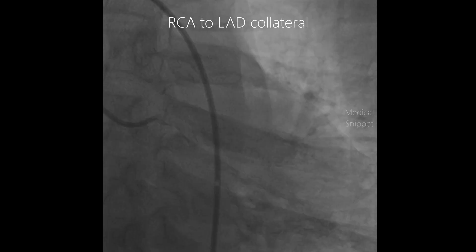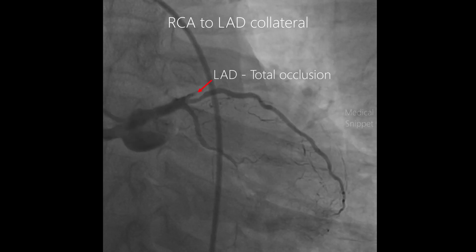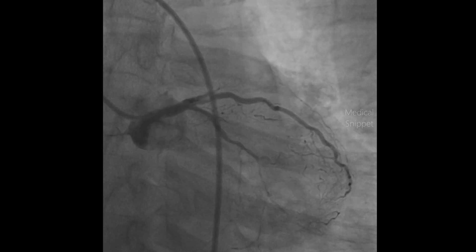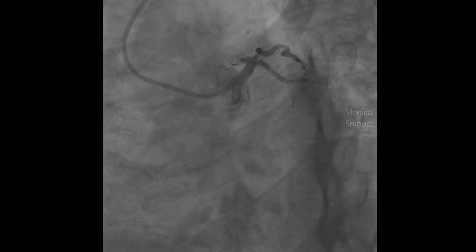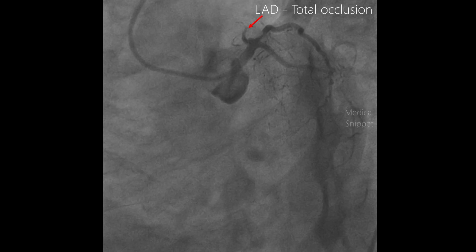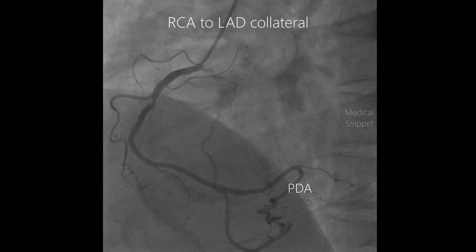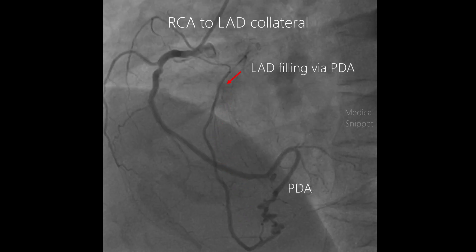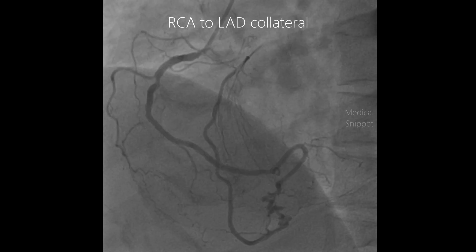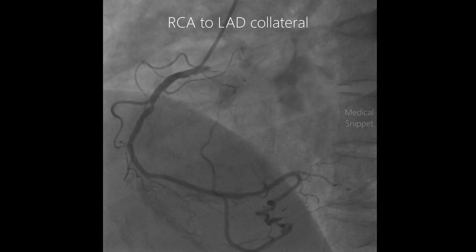Let's see coronary collaterals in angiograms. In the first case, we see collaterals from the right coronary artery to the left anterior descending artery. One can see there is total occlusion of the LAD. In this angio shot, the LAD is being filled from the PDA — that is, the posterior descending artery — which is a branch of the right coronary artery.